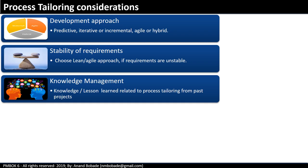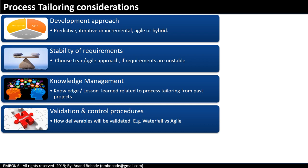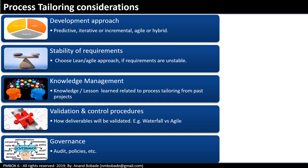Knowledge management: if a project is a repeat project where the organization has already executed similar projects, then knowledge and requirement management will help the project manager with related systems and their possible reuse. Validation and control procedures: there will be different procedures based on the selected project approach — for example, the business acceptance process will be tailored based on whether waterfall or agile is chosen. Governance: governance mechanisms like audit policies may lead to tailoring some processes — for example, in government projects, governance might be very strict and 100% adherence to policies may be mandatory.